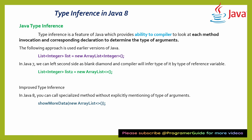In Java 7, you can leave the right-hand side as a blank diamond and the compiler will infer the type from the reference variable declaration. So if the list is of type Integer, ArrayList is also inferred as Integer. In Java 8, you don't need to explicitly mention any type at all. That is the type inference concept — you can call the specialized method without explicitly mentioning the type of arguments.